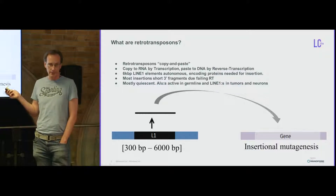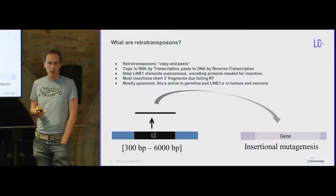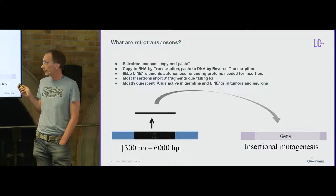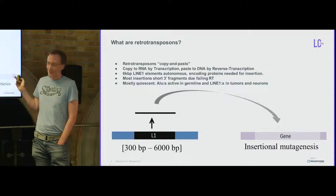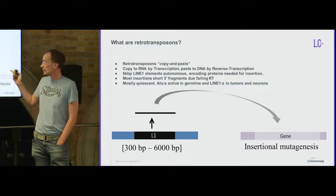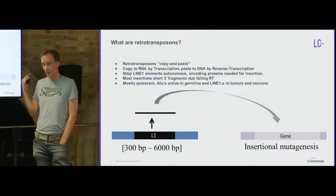The reverse transcription often fails, so the insertions are typically not full-length. ALUs are even more common than LINE-1s — they are 300 base pair elements — but they are less interesting to me because they are more active in the germline, whereas LINE-1s are sometimes activated in tumors, and for some reason somatically also in the brain or neurons.